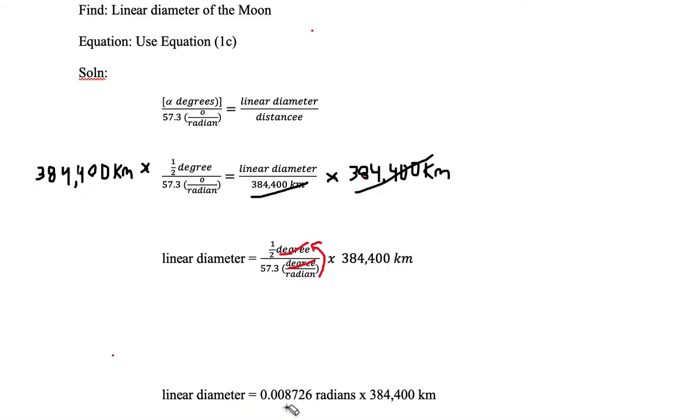Here we have 0.008726 radians because degrees canceled out and radians kicked to the top, and we multiply that by 384,400 kilometers.